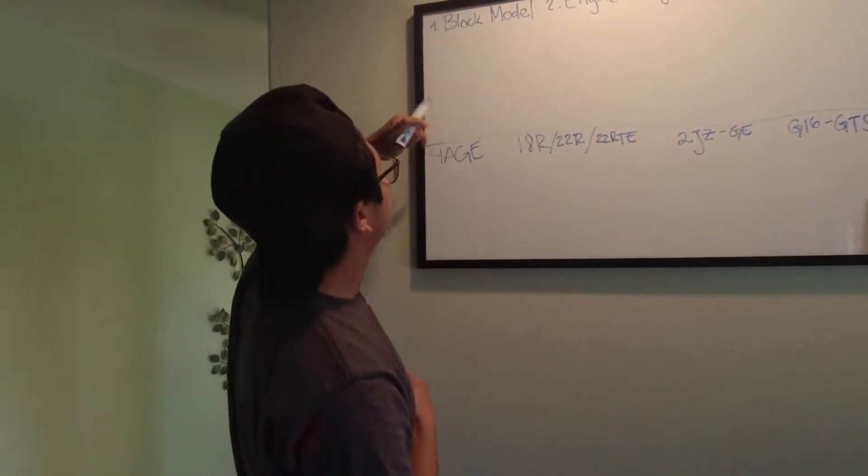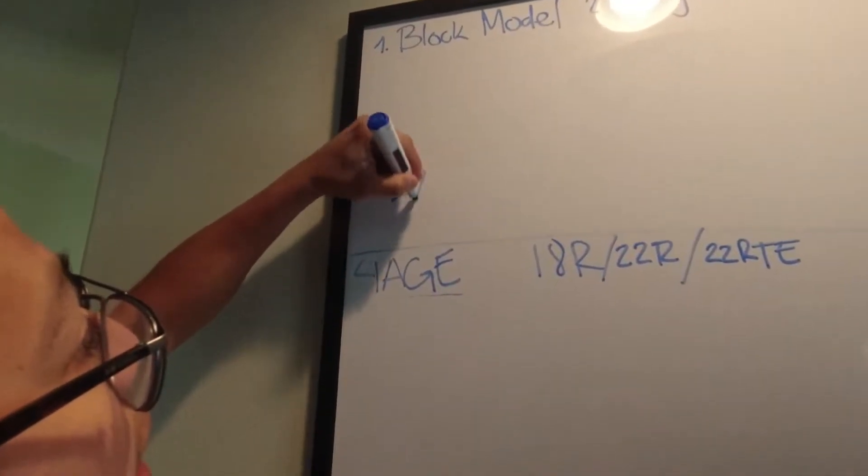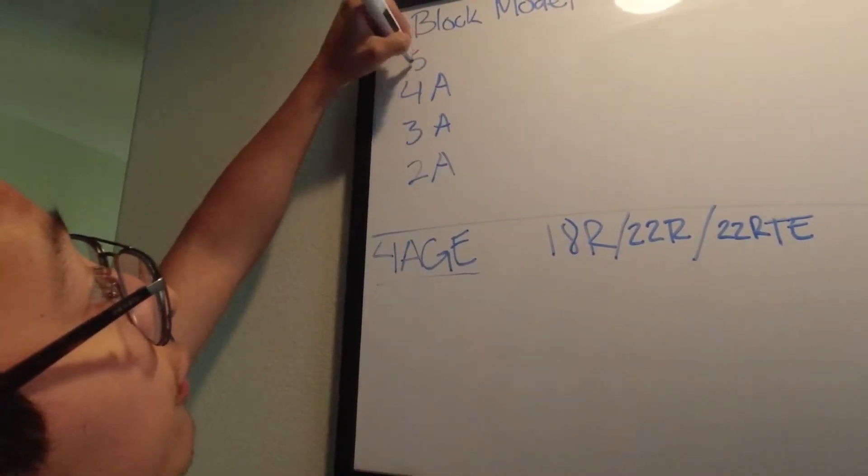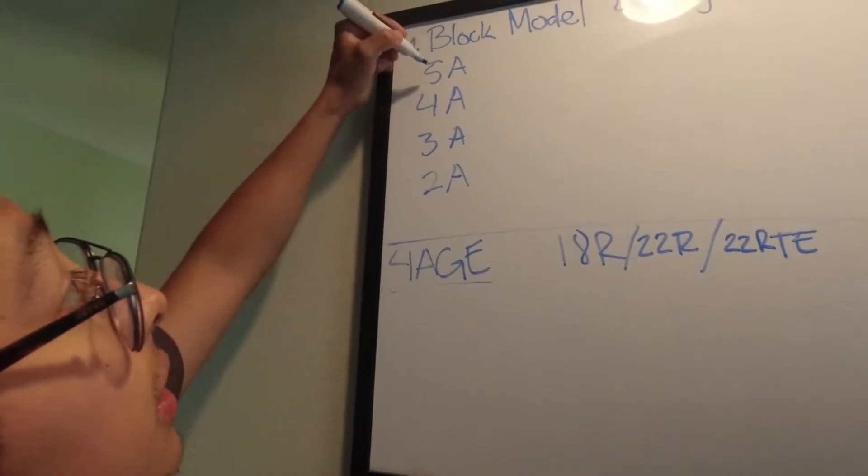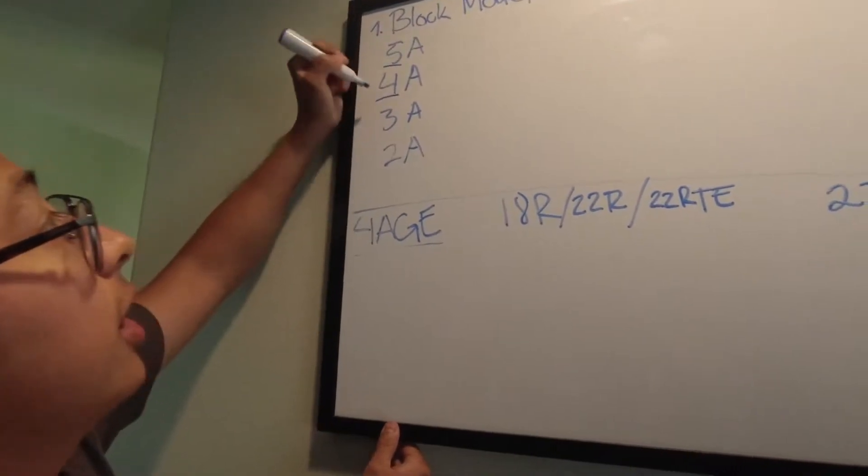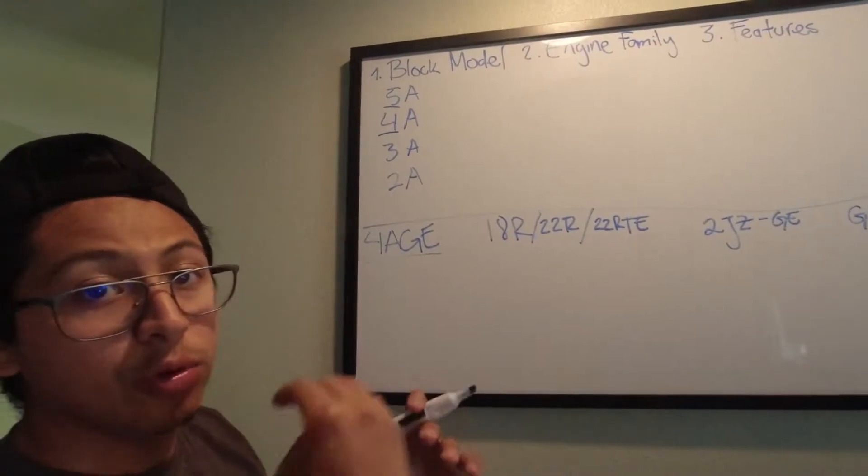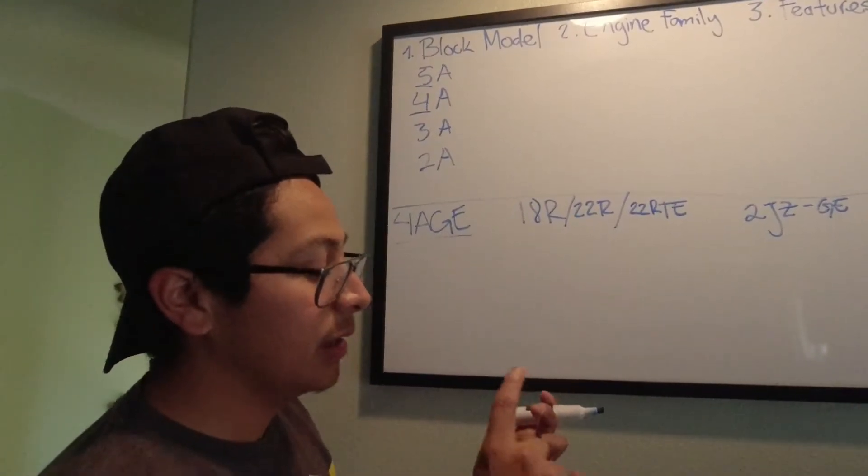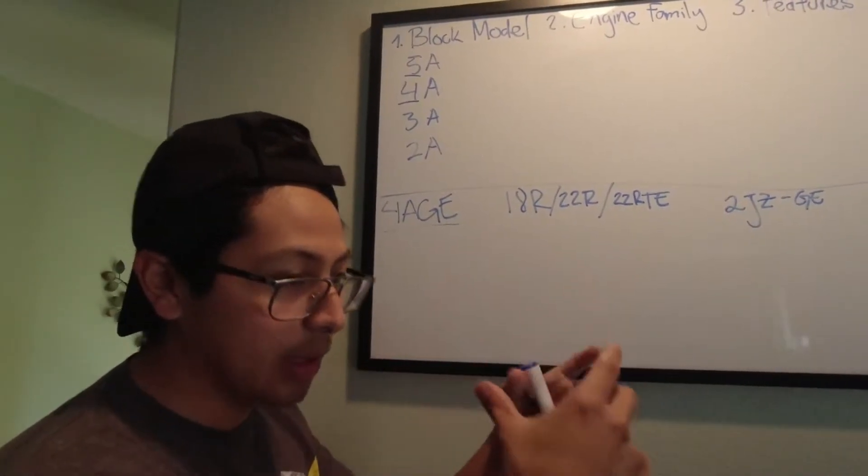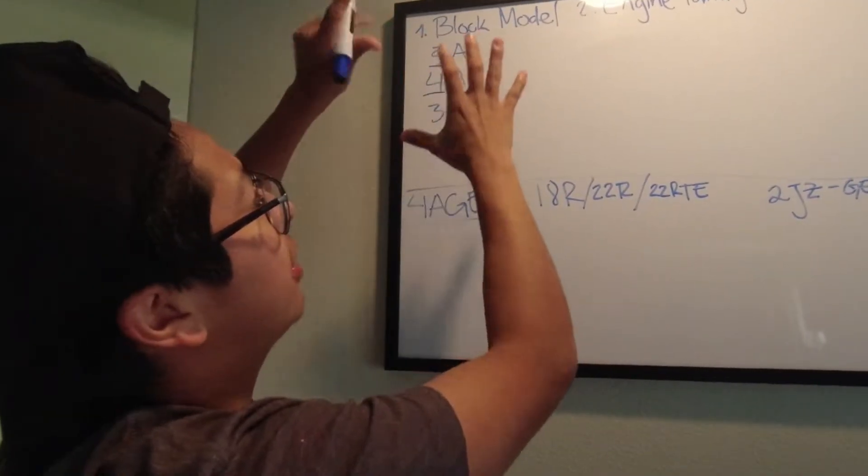So, for example, right here, if we take this example, the 4AGE, there was a 2A, there's a 3A, there's a 4A, and it goes up to a 5A. So, then, the 5A will be a larger displacement than the one that's 4A, and so on with the other ones. Every single engine family has multiple variations. Now, it has to do with the size of the block, or the bore of the block, or it can also deal with the specific head that it has on.